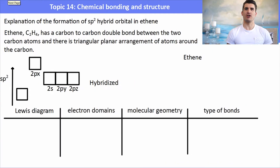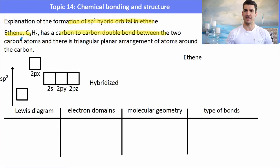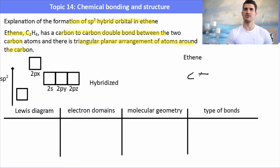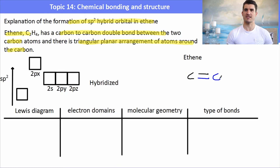The formation of an SP2 hybrid orbital in ethene is slightly different. Ethene has a carbon-to-carbon double bond between two carbon atoms and a triangular planar arrangement of atoms around each carbon. This means we're starting to form a pi bond — whenever we have a double bond, we have the formation of a pi bond. Here are the two carbons with a double bond between them, and the hydrogens connected to each carbon, because ethene has the formula C2H4.